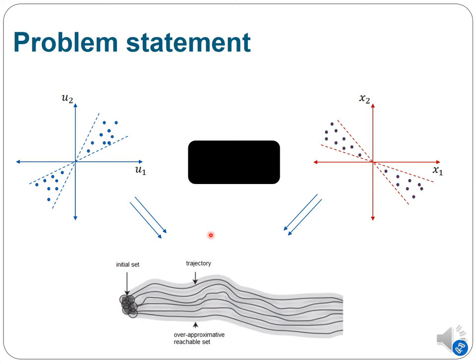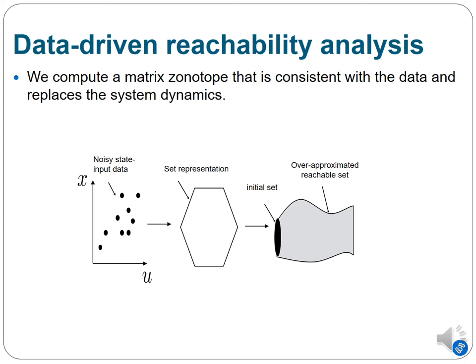We have input and state trajectories, and we would like from the input and state trajectories to compute the reachable region. So it is data-driven reachability analysis. Our idea: to compute a matrix zonotope.